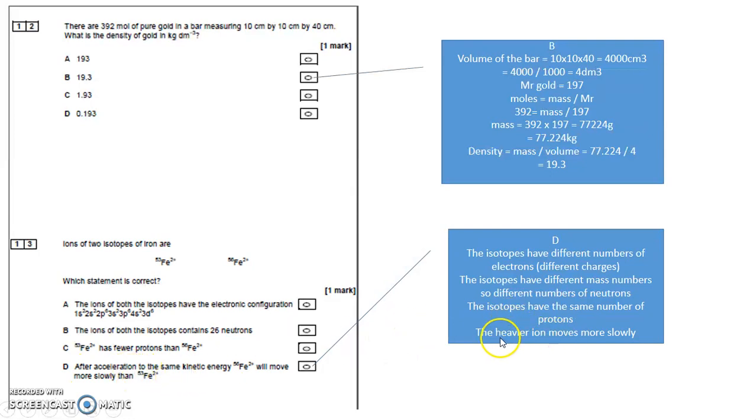Well, the heavier ion moves more slowly. That's the nature of it. The heavier it is, the more slowly it moves. So D is correct.